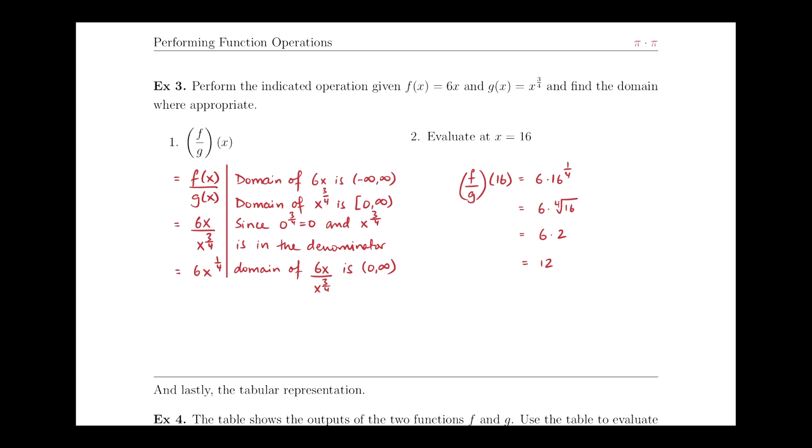Alright guys, last two examples. Let's say we're given two functions, f of x equals 6x and g of x equals x to the 3 fourths power. We're asked to find what f over g of x would be and what the domain of that new function would be.